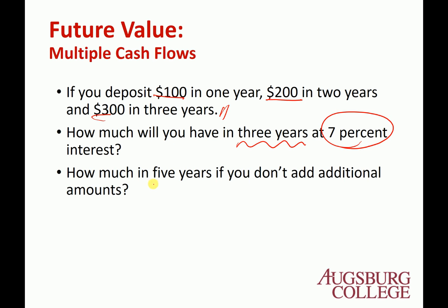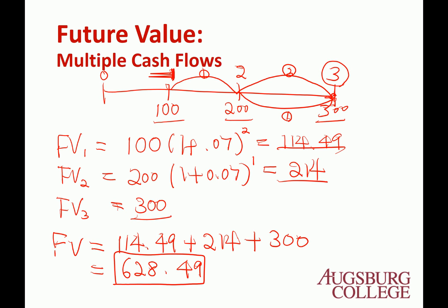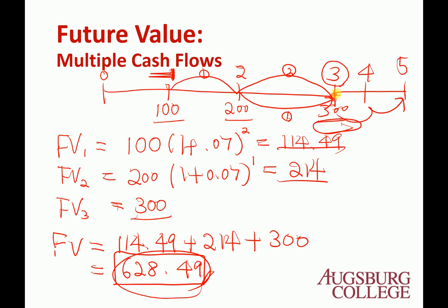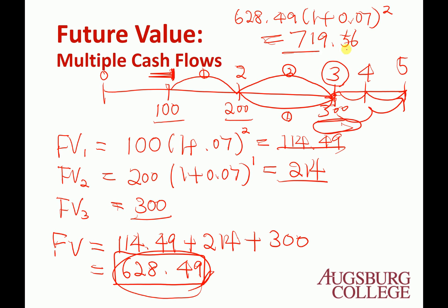The next question: how much will you have in year 5 if no additional amounts are added? We have $628.49 at year 3, with 2 more years — year 4 and year 5 — and no more money added. This is like a lump sum of $628.49 growing for 2 more years. So the future value is $628.49 × (1.07)² = $719.56.